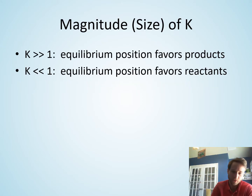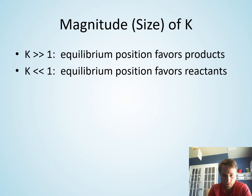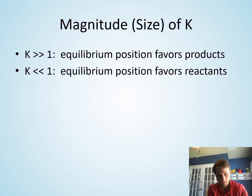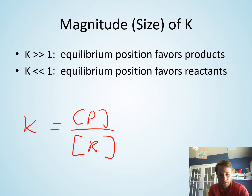Before we talk about the reaction quotient, I want to mention that the magnitude of K does tell us something about the chemical reaction. If K itself is a very large number — indicated here by saying it's much greater than one — that means the reaction favors products, because the equilibrium constant K is the concentration of products over the concentration of reactants.